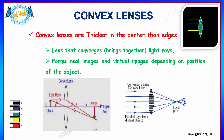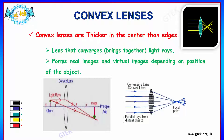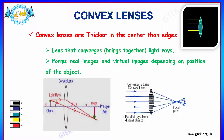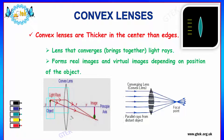Let us see about convex lenses. In general, convex lenses are thicker in the centre than at the edges. A convex lens converges — that is, brings together — light rays, and forms real images and virtual images depending on the position of the object. You can see the convex lens here, where an object is placed and light rays passing through the convex lens form an image.